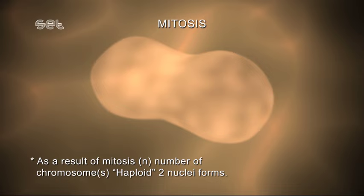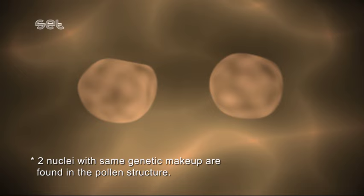Through mitosis, each microspore produces pollen grains containing two nuclei. Each pollen grain contains two genetically identical haploid N nuclei.